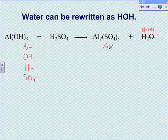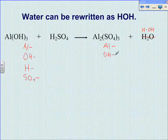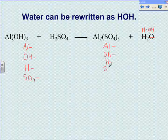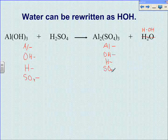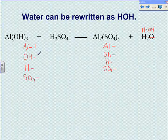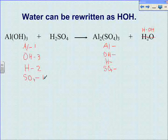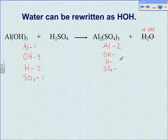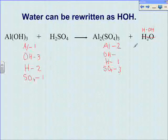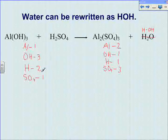We list the elements in the same order on the right side, and then we count the number on each side. Here we have one aluminum, three hydroxide, two hydrogen, and one sulfate. On the right side, we have two aluminum, three sulfate, one hydrogen, and one hydroxide. Our equation is not balanced — our numbers don't match up.